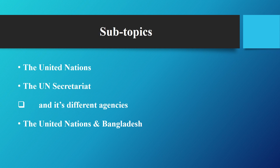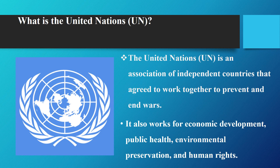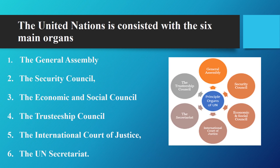Today our subtopics are the United Nations Secretariat and its different agencies, and the relationship between the United Nations and Bangladesh. The United Nations was built with the motto to prevent wars and to maintain peace in this world. It was built after World War Two and also works for economic development, public health, and human rights. The United Nations was formed with six main organs.